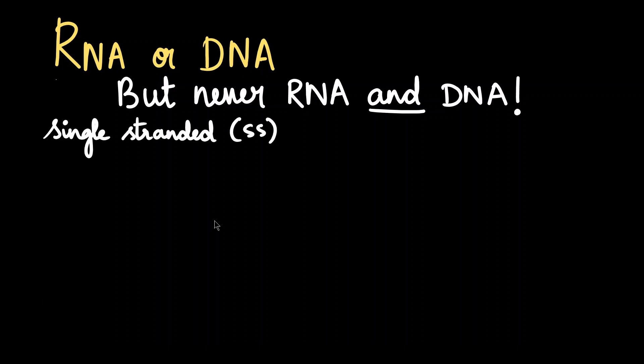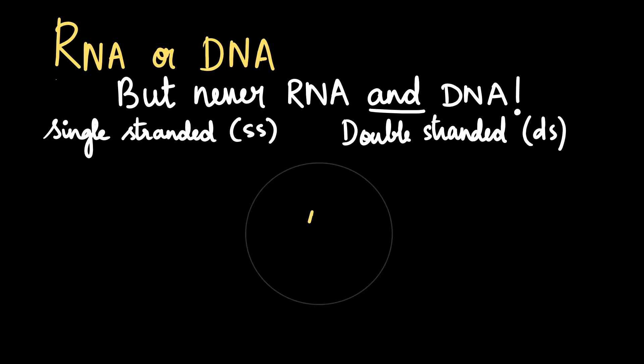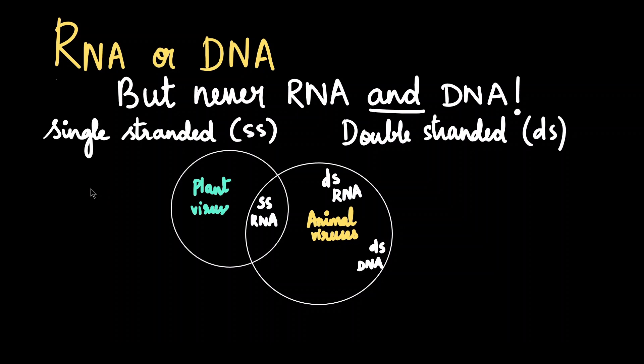These could be single-stranded or double-stranded as well. Among all the viruses that we have discovered till now, the maximum are animal viruses. Animal viruses can have single-stranded RNA, double-stranded RNA, or double-stranded DNA. Next comes plant viruses, and we see only single-stranded RNAs within them. Phage viruses have double-stranded DNA within them.